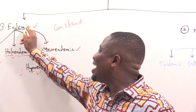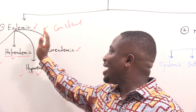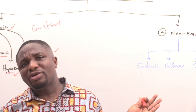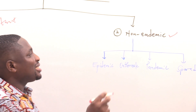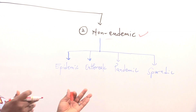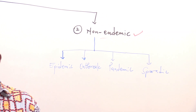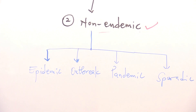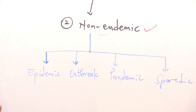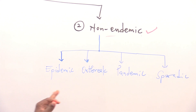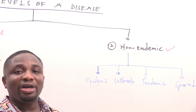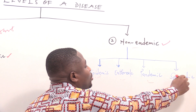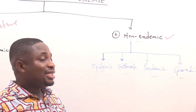That will do for the endemic and its subtypes. Now let's move on to the second group, which we refer to as non-endemic. Non-endemic means the disease is not going to be at constant levels — not constantly present. For the non-endemic, we have four types: epidemic, outbreak, pandemic, and sporadic.